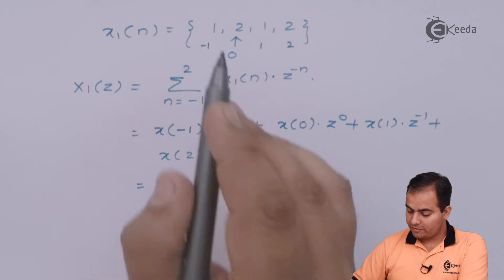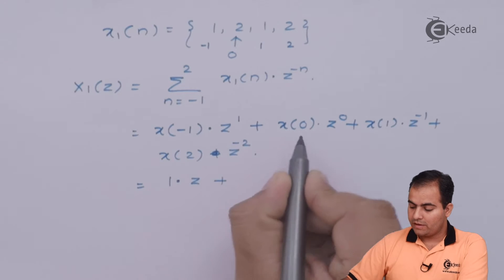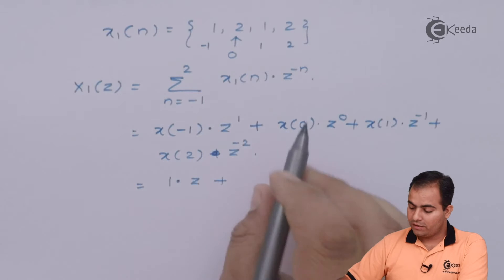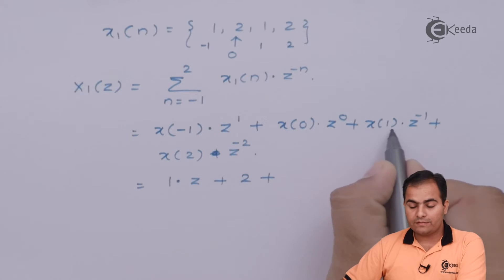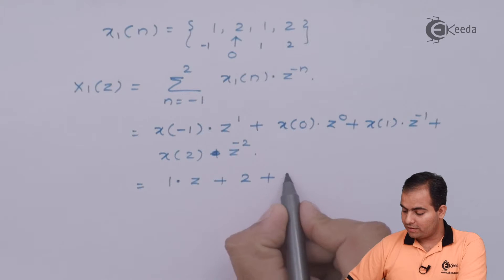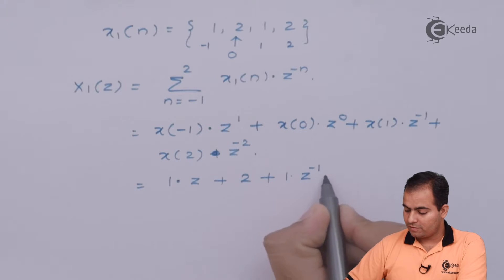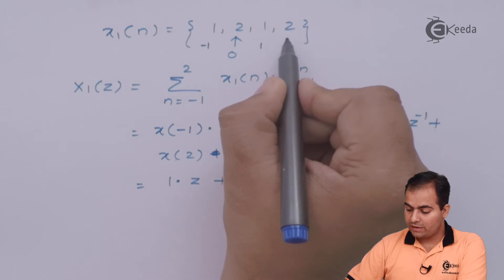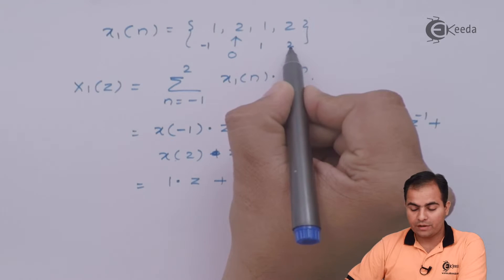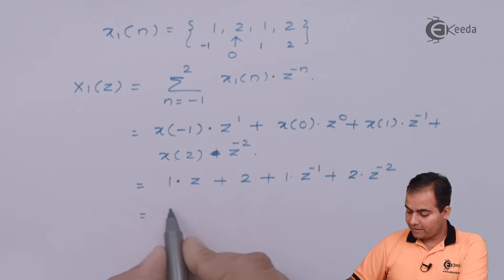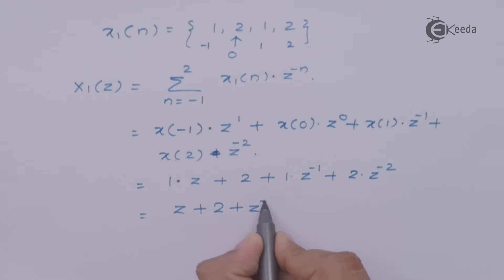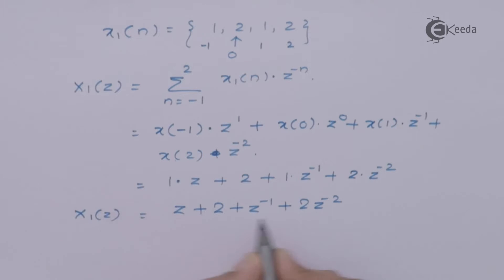X(minus 1) is 1, giving us Z to the power 1. X(0) is 2, and Z to the power 0 equals 1, so 2 times 1 gives us 2. X(1) is 1, giving 1 times Z inverse. X(2) is 2 — at location n = 2 the amplitude is 2 — giving 2 times Z to the minus 2. This result is our X1(Z), marked as equation number 2.